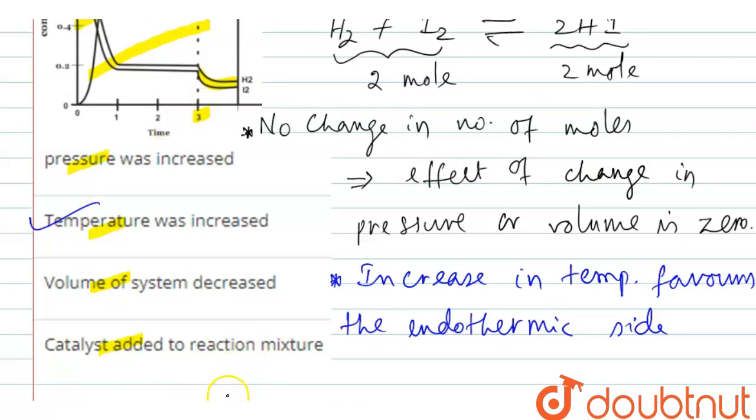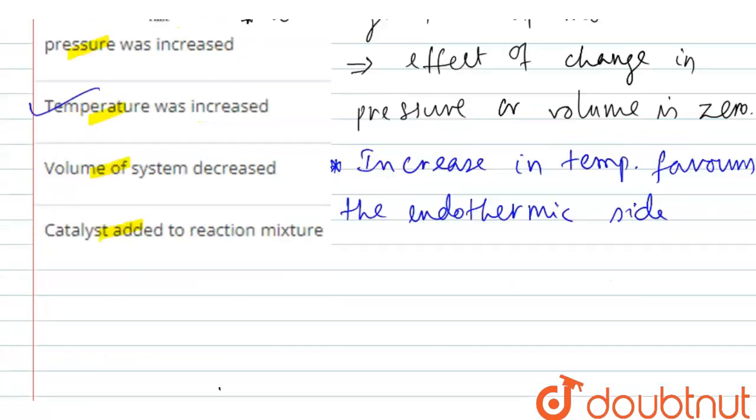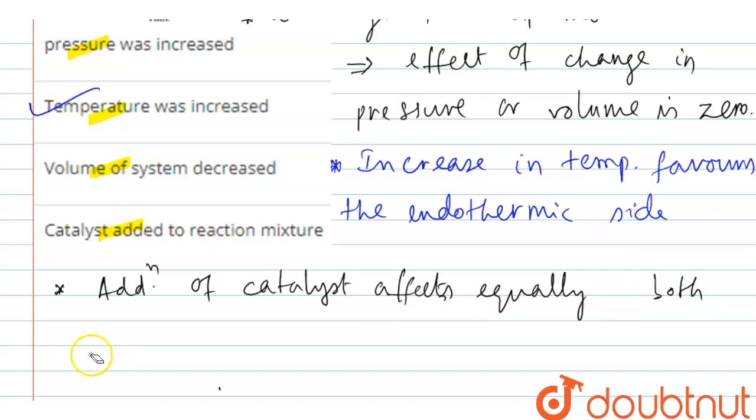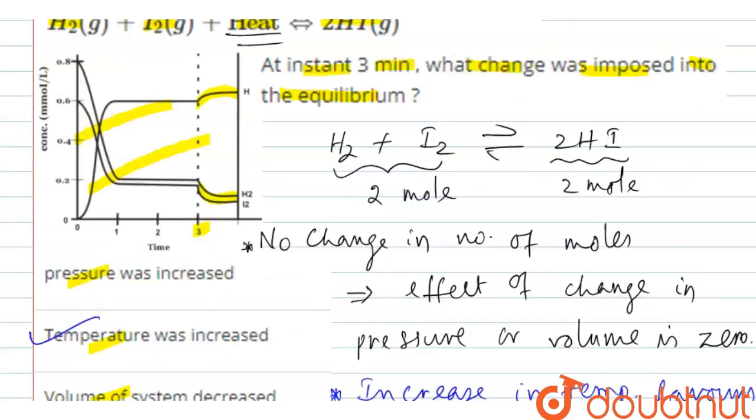We know addition of catalyst has no effect because it affects both the reactions equally, forward and backward reactions. Addition of catalyst affects equally both forward and backward reactions.